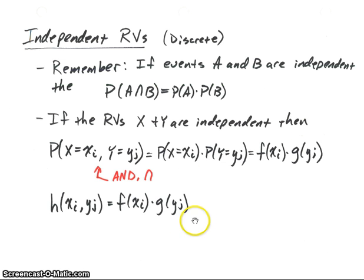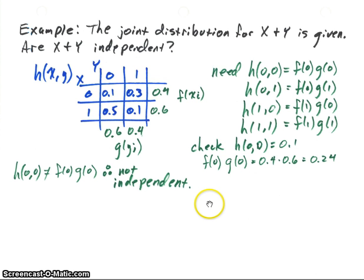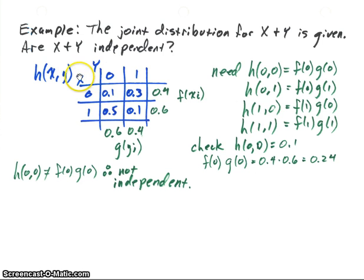That's what we mean by independence for random variables. So let's look at an example. We have a joint distribution function for X and Y given here in blue, and the question is: are X and Y independent random variables? In order for the random variables to be independent, the joint distribution function has to equal the multiplication of the two marginal functions. So the first thing we have to do is find the marginal distribution functions — we need to find f(x_i) and g(y_j).